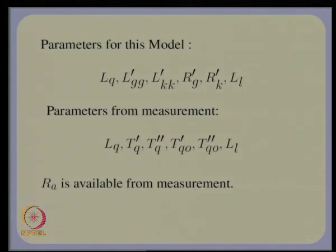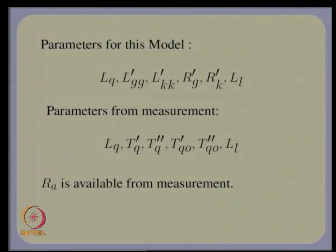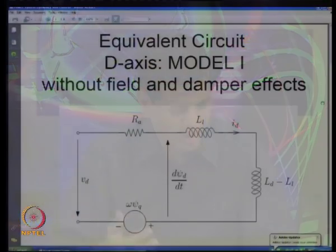There is an approximation involved in this model: L_fh' has been equated to M_df', which equals L_d minus L_l. That is one approximation made. The advantage of using this model is that there is a direct proportionality relationship between psi_f' and psi_f, psi_h' and psi_h, psi_g' and psi_g, and psi_k' and psi_k. In fact, if you look at this model, you can draw a kind of an equivalent circuit of Model 1.